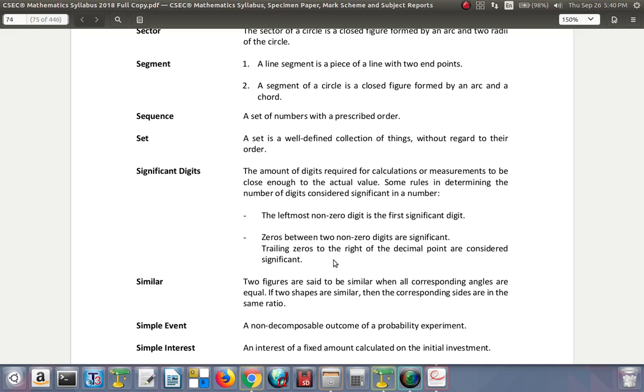Similar. Two figures are said to be similar when all corresponding angles are equal. If two shapes are similar, then the corresponding sides are in the same ratio. They look alike, however they can be of different sizes, one big and one small, like the model of a house and the house itself.